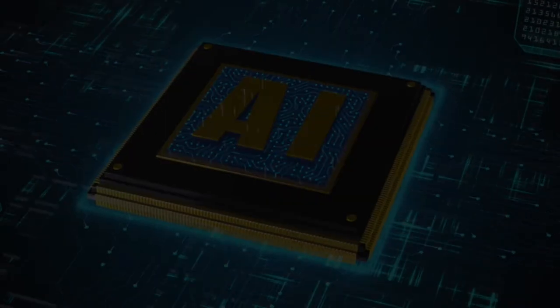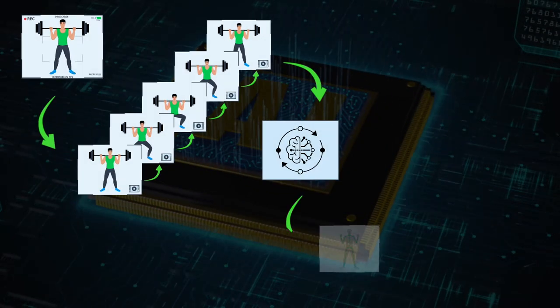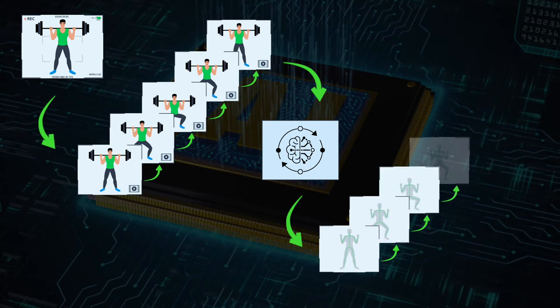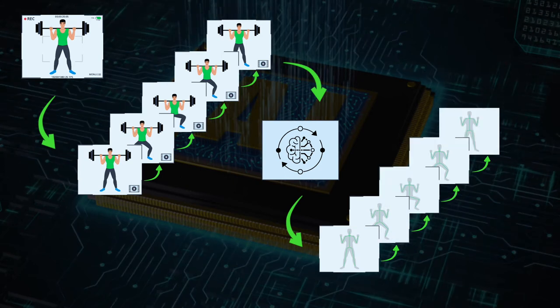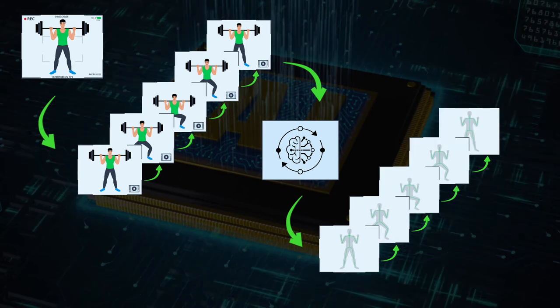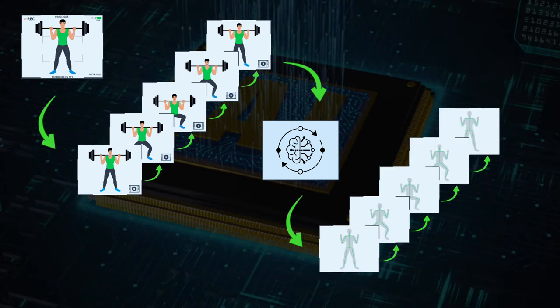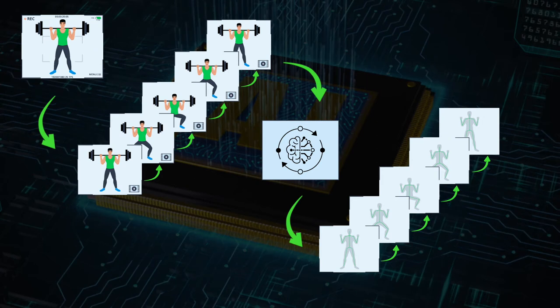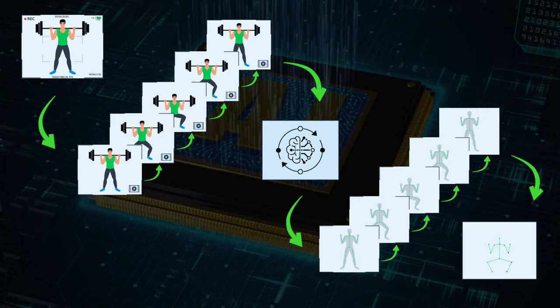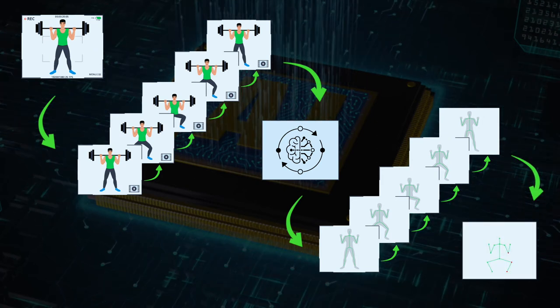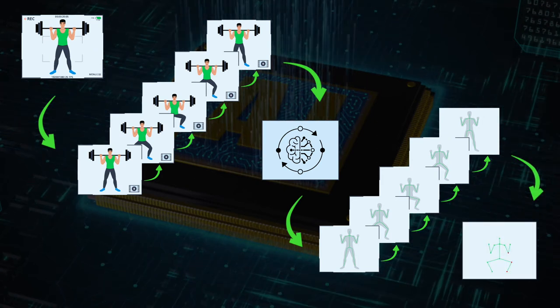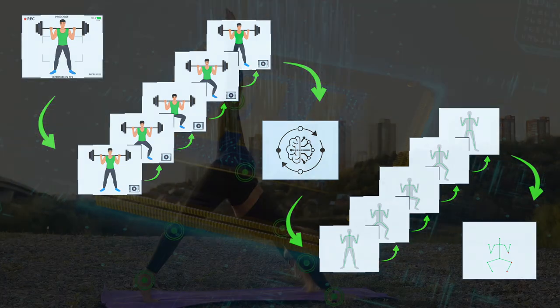The virtual skeleton is checked through geometry-based rules and the mistakes in the exercise are pinpointed. The AI Fitness Coach then sends its recommendations and best wishes back to the user.